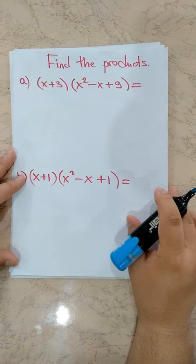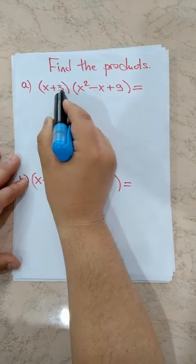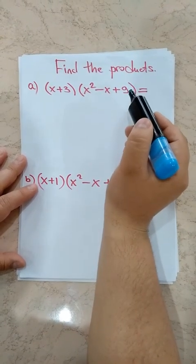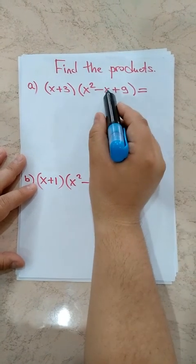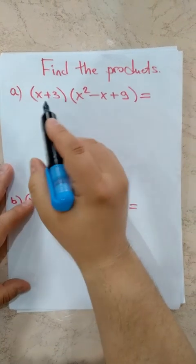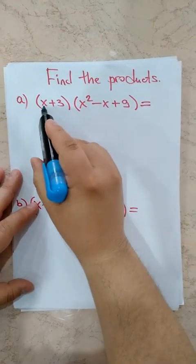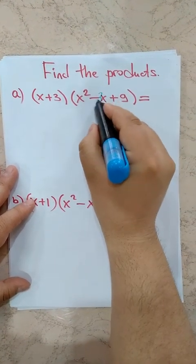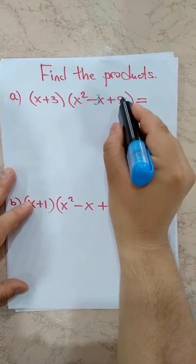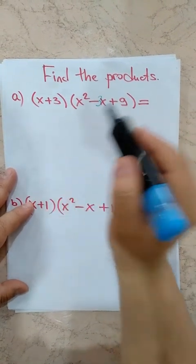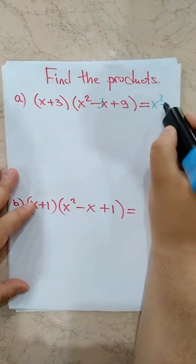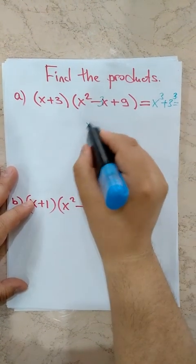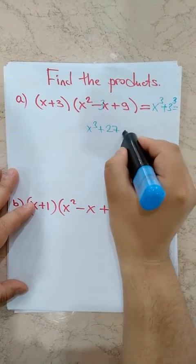Find the products. This is first term plus second term, times first term squared minus first term times second term — note there is a mistake here; this should be 3X — plus second term squared, which is 9. Our first term gives X cubed, plus 3 cubed equals 27. So the answer is X cubed plus 27.